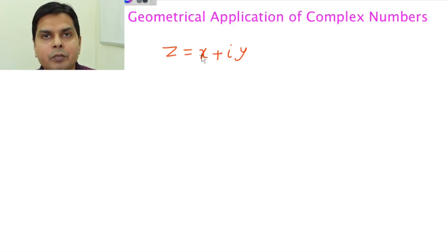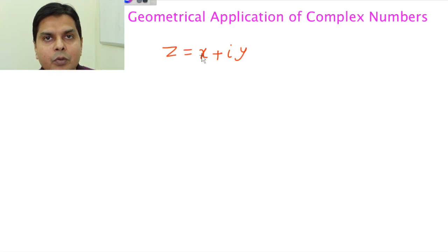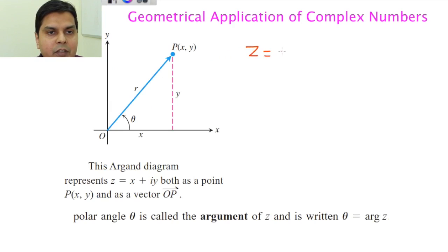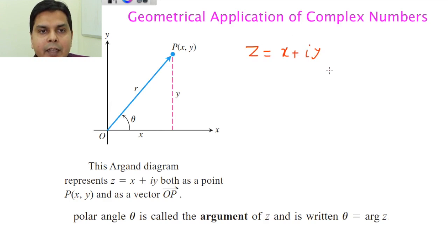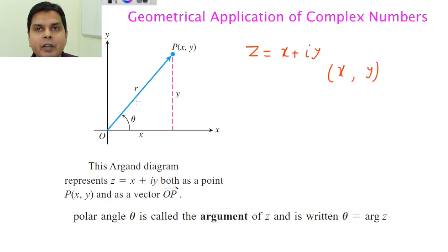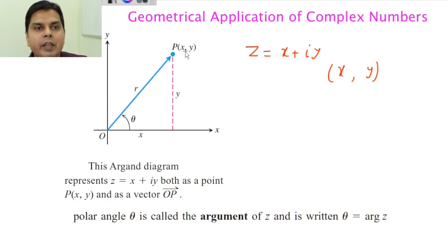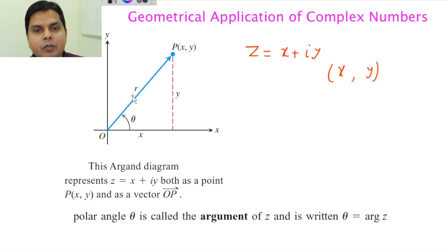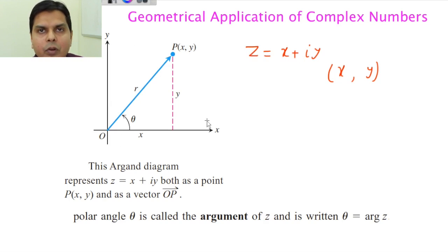Almost all things you can do with a two-dimensional vector, you can do with a complex number also. A complex number z = x + iy can be written as an ordered pair (x, y). When represented in the x-y plane, you represent it as a vector. Point P has coordinates (x, y); joining P to the origin O gives vector OP, which also represents the complex number z = x + iy.